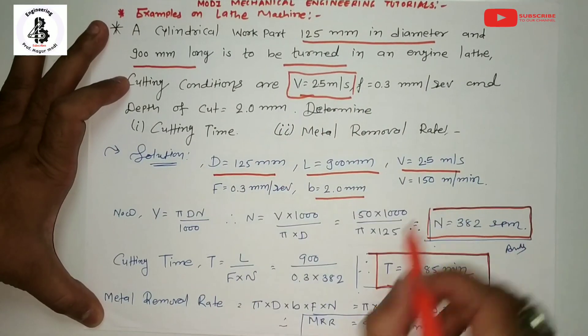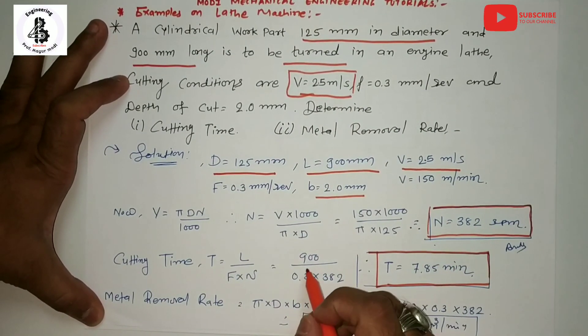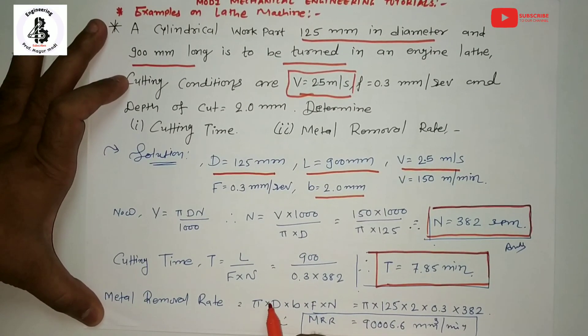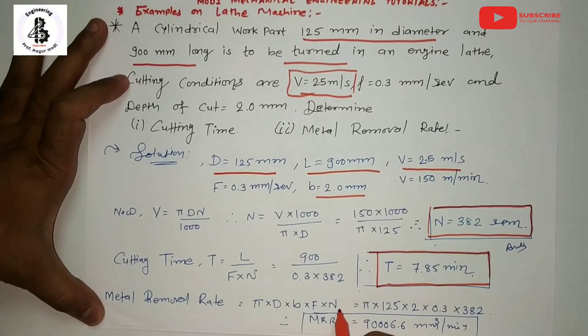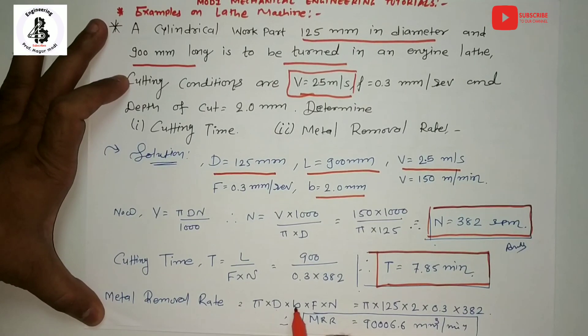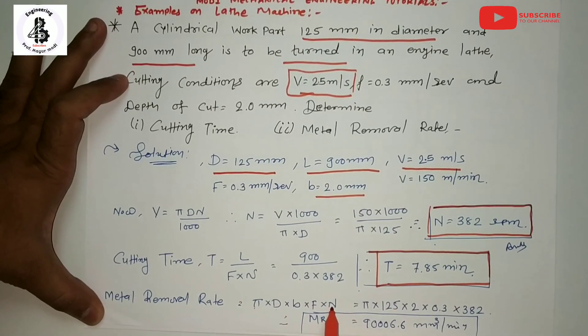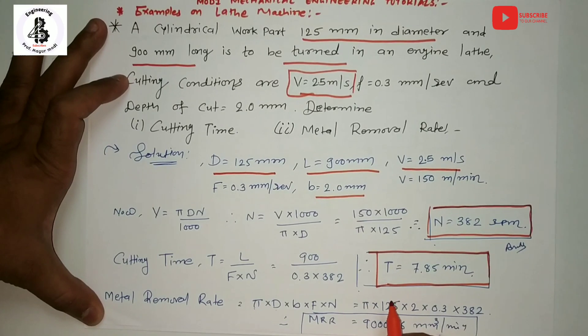For these parameters I would like to find the metal removal rate or MRR. Basically for the turning operations, MRR = πDN × feed × depth of cut. In simple way: π × D × depth of cut × feed × revolutions. This equation is used for the lathe operations for turning.